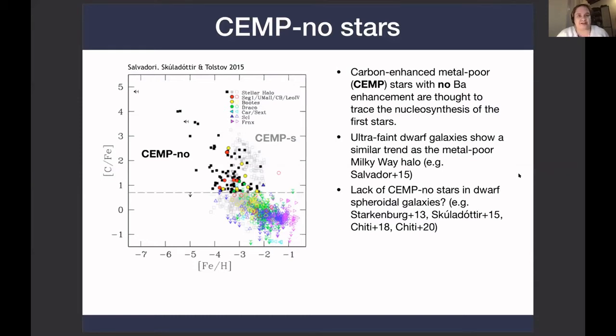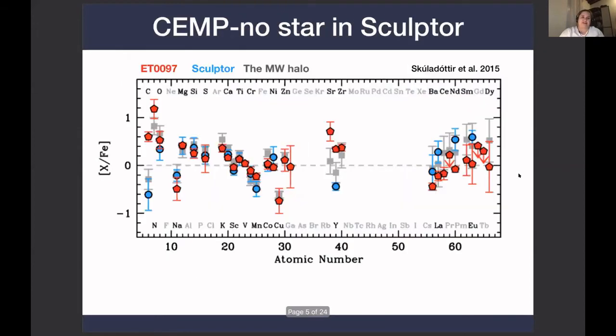But not only are these stars difficult to find in these larger galaxies, but the ones we do find are strange. So here you see a CEMP-no star in Sculptor in red, and the general Sculptor population in blue, and Milky Way halo stars in gray. The carbon is high, but all the alpha and iron peak are basically the same as any other low-metallicity stars.